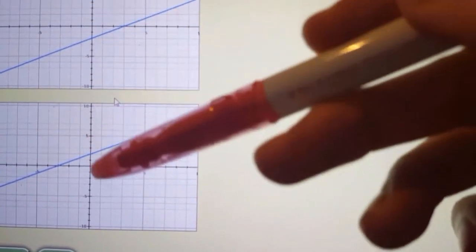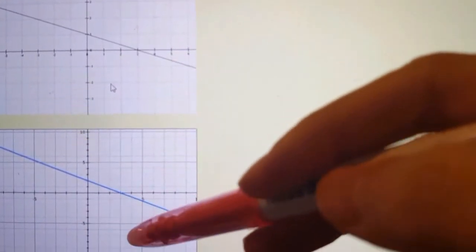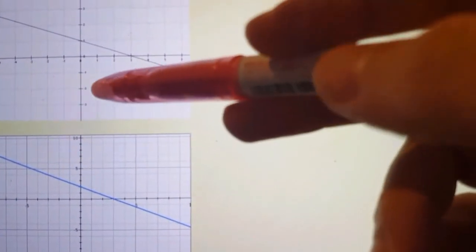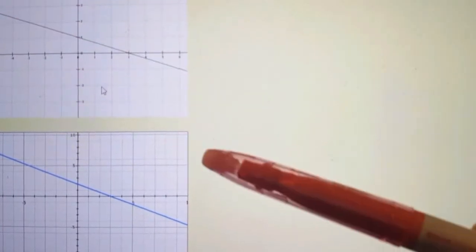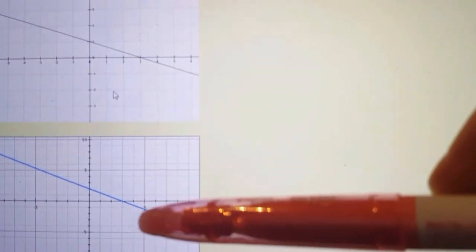So we can eliminate these two options. Now we have two graphs left that have lines both falling. That means these lines have negative slope. Let's look one by one.